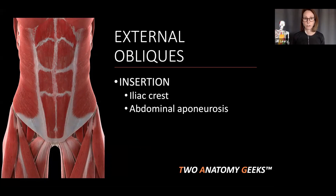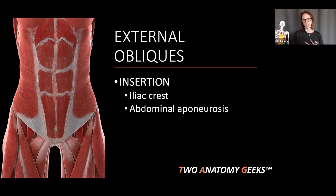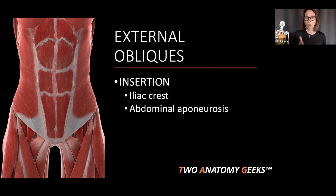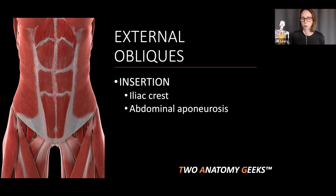The insertion of the external obliques: once it comes down from those lower eight ribs and descends, it has insertions on the abdominal aponeurosis — that sheet of connective tissue over the front of the rectus abdominis — and also a bony attachment at the iliac crest. Some of the upper fibers use the abdominal aponeurosis as an insertion, while some of the lower fibers coming from the lower ribs use the iliac crest, keeping that diagonal fiber direction.